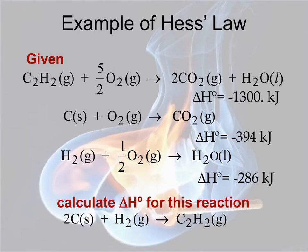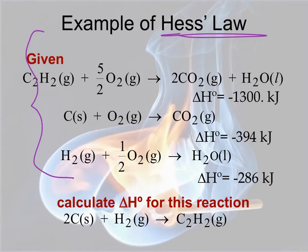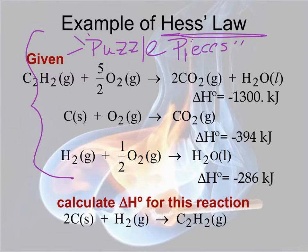In a Hess's Law problem, you will typically be given two or three reactions — think of them as puzzle pieces. Your goal is to put those reactions together by adding, subtracting, or multiplying them so that you ultimately end up with the target reaction. The given puzzle piece reactions have known enthalpy changes, but the enthalpy change for the reaction of interest is not known.